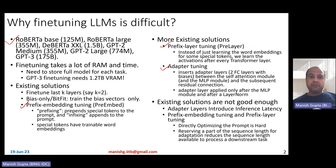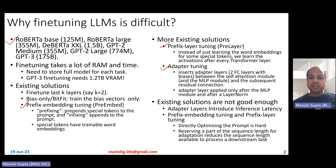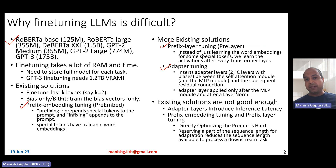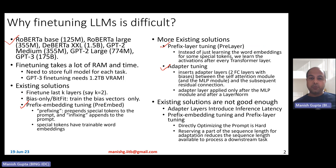The existing solutions have drawbacks. Adapter layers introduce inference latency — the more adapters you add, the more time is required for inference through those layers. Prefix embedding tuning and prefix layer tuning are hard to directly optimize: increasing the size of the prefix doesn't always give a monotonous increase in accuracy across datasets. Also, reserving part of the sequence length for the prefix reduces the overall sequence length available to process the downstream task.